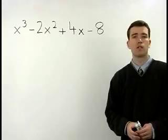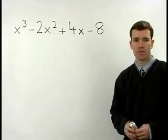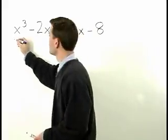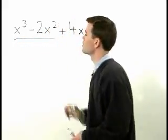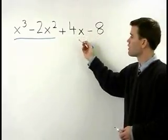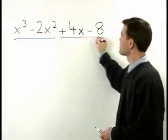The way you do it is by grouping terms together. If we group the first two terms together, x cubed minus 2x squared, and the last two terms together, positive 4x minus 8.